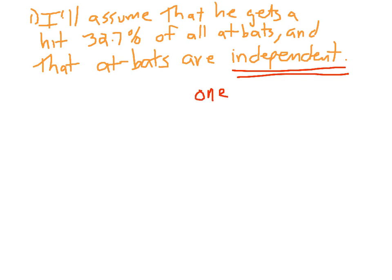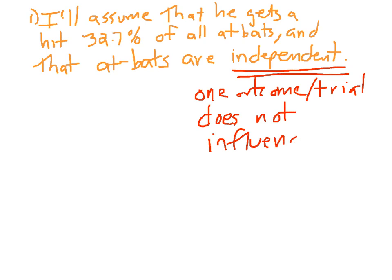Independent means one outcome or trial does not influence another. In this example, whether or not he gets a base hit on the first at bat has absolutely nothing to do with the second, third, or fourth at bat — every single at bat is independent. If you think about baseball, this is kind of a bad assumption — he might be having a bad day or facing a tough pitcher — but we have to assume independence. If you knew whether he got a hit on the first at bat, the probability of getting a hit on the second at bat is still 32.7%.